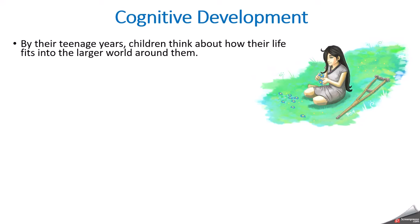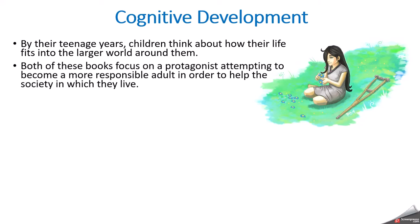There's some great fan art of Kira. By their teenage years, teens begin to think about how their life fits into the larger world around them — I talked about that in my last lecture. Both of these books focus on a protagonist attempting to become a more responsible adult in order to help the society in which they live. Cognitively, I talked a lot about how teens go through a rebellious period, and both of these characters are sort of rebelling against the system but also trying to help it.